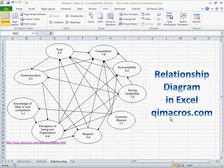Another of the seven management and planning tools is the relationship diagram, or interrelationship digraph, as it's sometimes called.